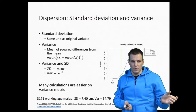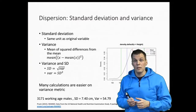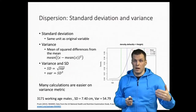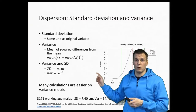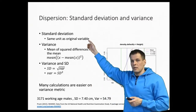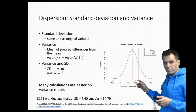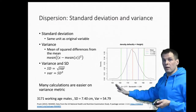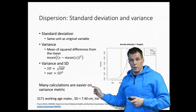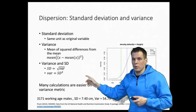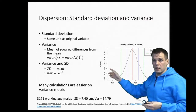Variance is another measure of dispersion, and it's related to standard deviation. It's used because it's more convenient for some computations and sometimes easier to interpret in context. For example, in regression analysis we assess how much of the variance the model explains of the dependent variable — we do this in the variance metric, not the standard deviation metric. Variance is defined as the mean of squared differences from the mean: you take each observation, subtract the mean, square the result, and then take the mean of those squares.